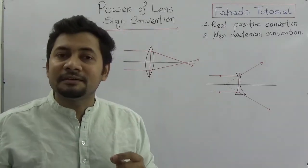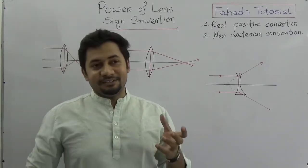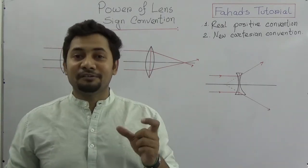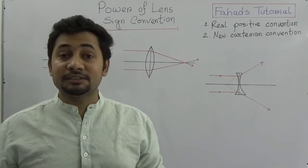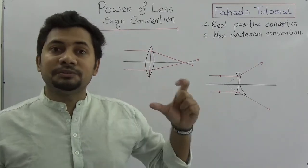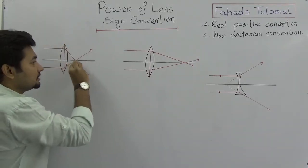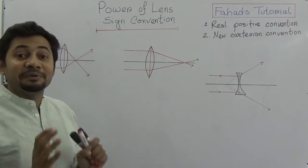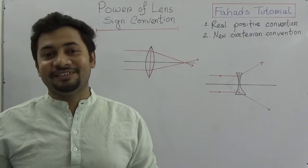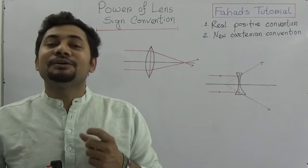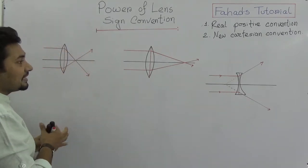What is the power of lens? In one line: the power, or the capability, or the capacity of a lens to convert a parallel ray into a convergent or divergent beam of light — that capacity is called the power of a lens.